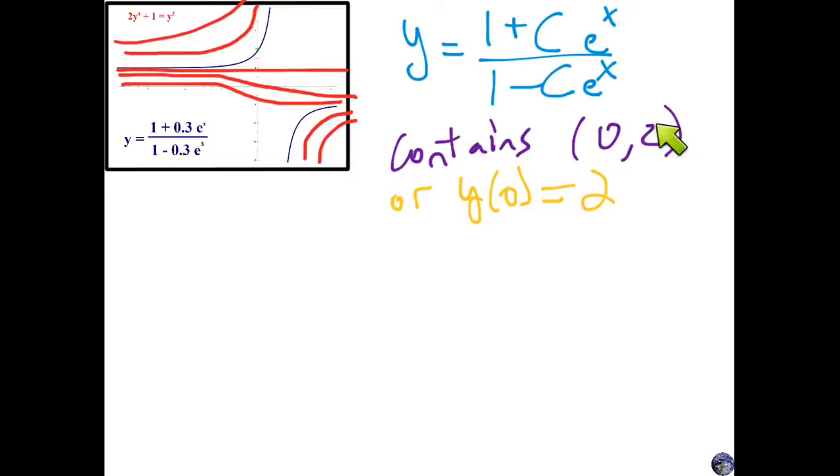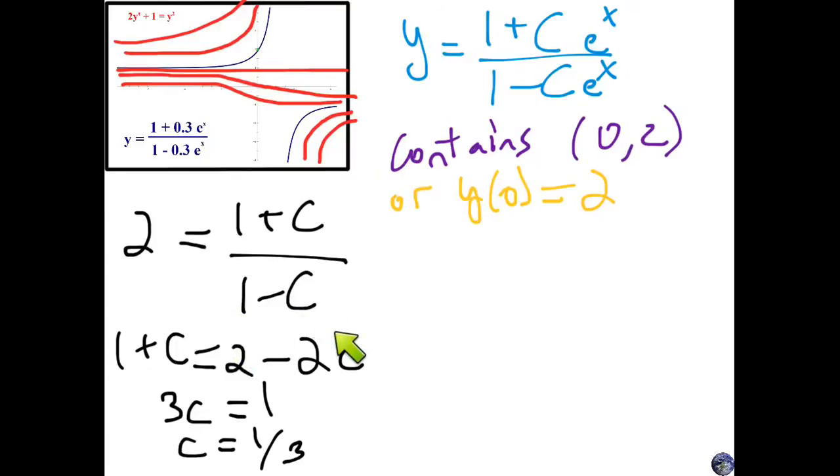The key idea to find the specific c is you go to this equation and plug in wherever you see an x, plug in 0, wherever you see a y, plug in 2. So instead of y I wrote 2, and instead of x I wrote 0. There's a lot of simplification that happens because e^0 is just 1. So c times 1 is just c. Now it's just algebra to solve for c. I'm going to cross multiply. So 2(1 - c) = 1 + c. Distribute: 2 - 2c = 1 + c. Add the 2c over and get 3c, subtract the 1 over and get 1. So 3c = 1, divide both sides by 3, c = 1/3.